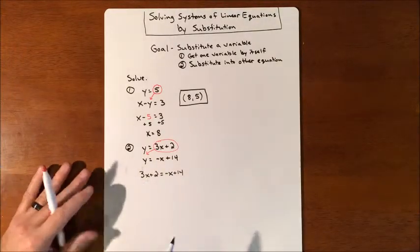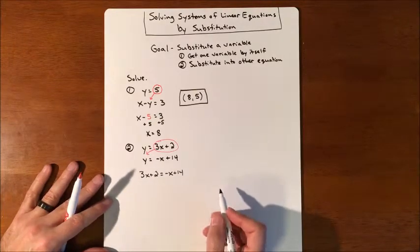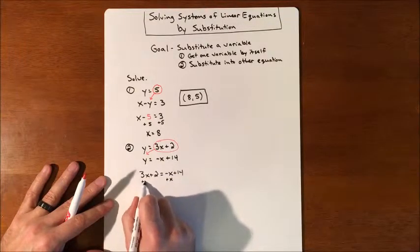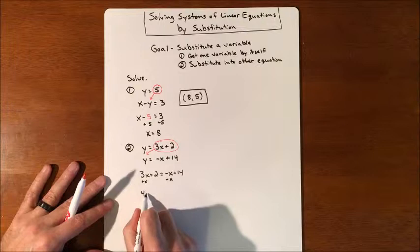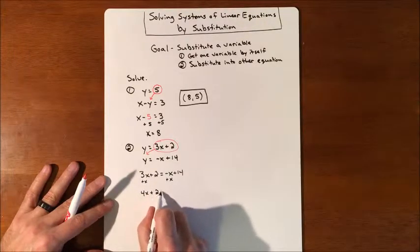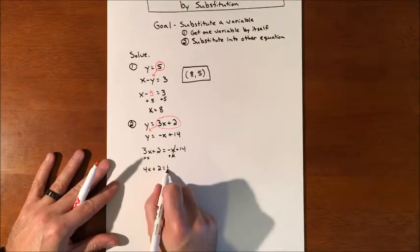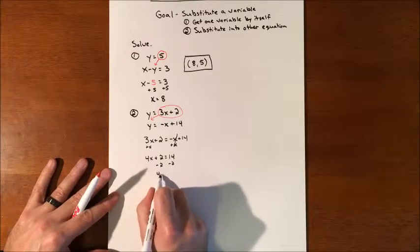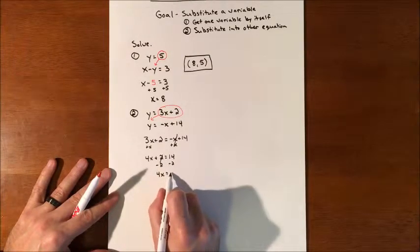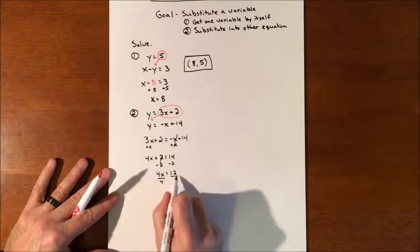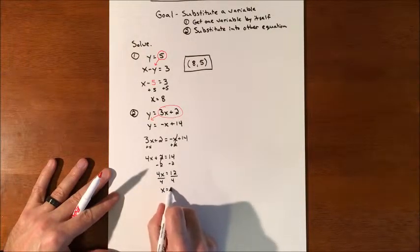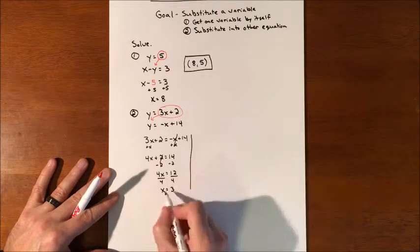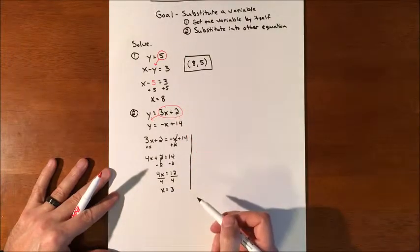We rearrange to get the x's on one side and constants on the other. To move the negative x over, we add x to this side, giving us 4x plus 2 equals 14. We subtract 2 from both sides — those cancel — and 4x equals 12. Dividing by 4, x equals 3. Now that we have the x value, we find y by substituting back into one of the equations.